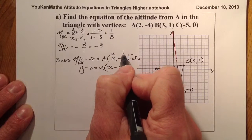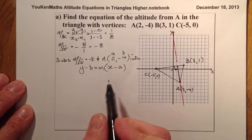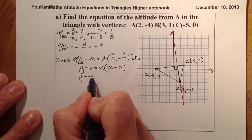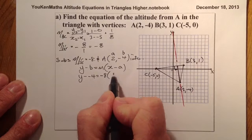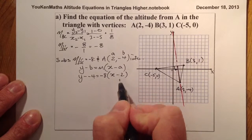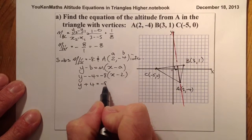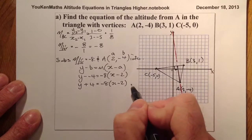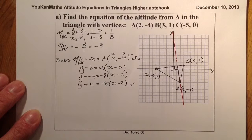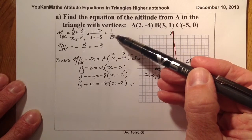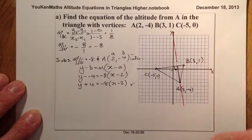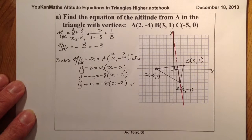So a = 2, b = -4, m = -8. That gives: y minus (-4) = -8(x - 2), which tidies up by getting rid of the double negative. You get three marks for this type of question: one for the initial gradient, one for the perpendicular gradient, one for the equation of the altitude. To prepare for simultaneous equations, multiply out the right-hand side and rearrange: 8x + y = 12.